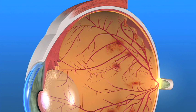If similar vessels grow abnormally in the front of the eye, they can block the drainage channels of the eye and cause high pressure and possibly glaucoma. Both your central and side vision can be affected by PDR.